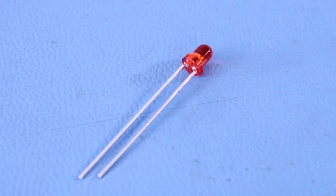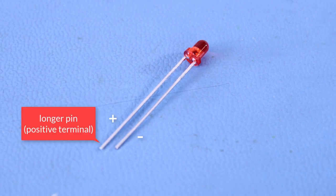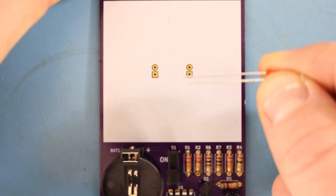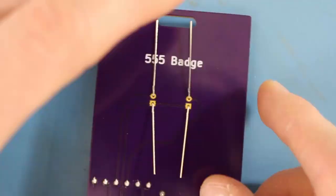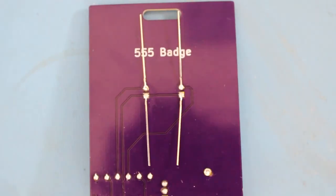If the LED does not have this flat edge, then the longer pin will almost always be the positive pin or anode. Place the LEDs with the positive pins going through the holes closer to the top of the board. Bend the leads, solder them, and cut off the excess.